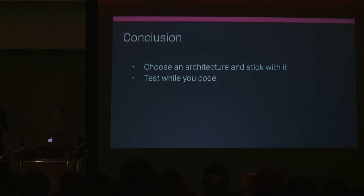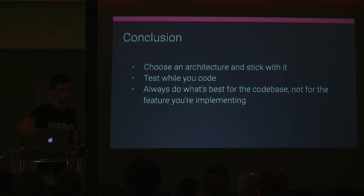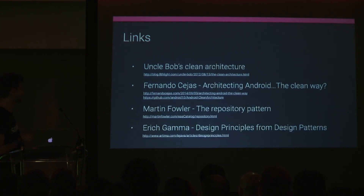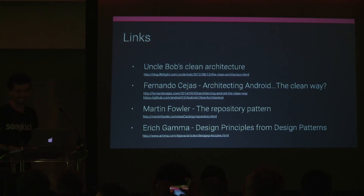If you start writing unit tests six months after implementing something, there's a problem. Always do what's best for the code base, not what's best for you personally or what you happen to be implementing. If you want to learn RxJava, take an overall approach — don't just start on one screen and then leave it for six months, because at some point you can end up with four different ways of doing threading in your app. If you fancy moving to London and working with this kind of architecture, we're hiring. Links to Fernando Cejas' blog and GitHub repo on clean architecture will be posted to my Twitter.